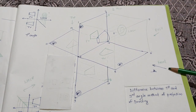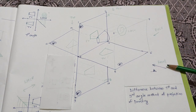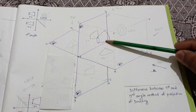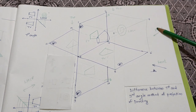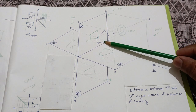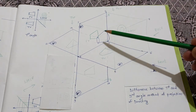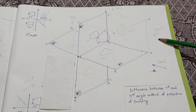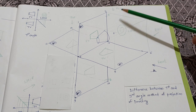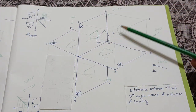In the first angle method, this is the direction of viewing. These are your eyes — the observer. If I start observing this frustum of a cone from the front, that gives the front view. If the object stays stationary and I observe from the right side, that becomes the right hand side view. Observing from the left gives the left hand side view. Observing from the top gives the top view. The object is kept in the first quadrant.